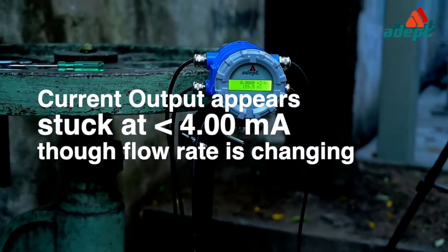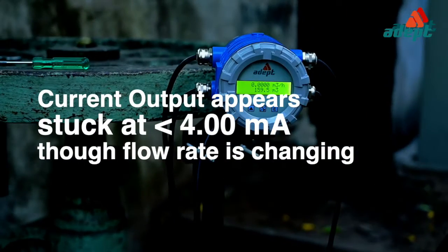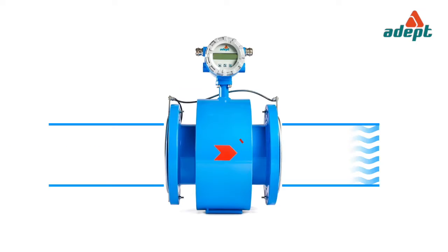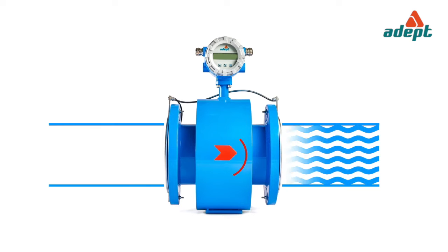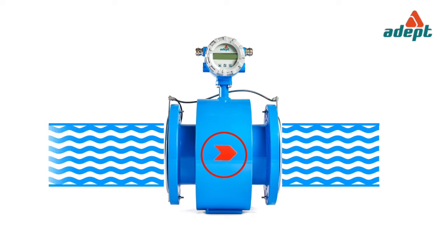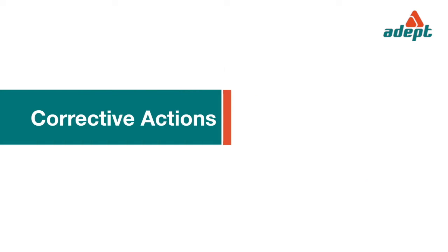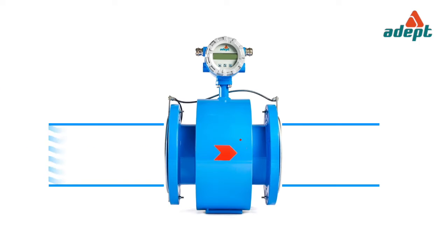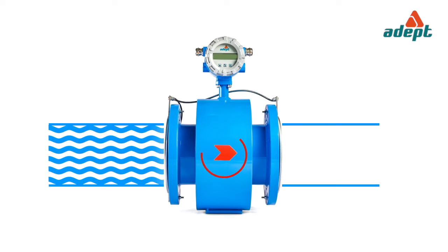Current output appears stuck at less than 4 mA though flow rate is changing. Possible cause: the direction of actual flow is opposite to the arrow mark on the flow tube. Corrective action: reverse the flow tube and check.